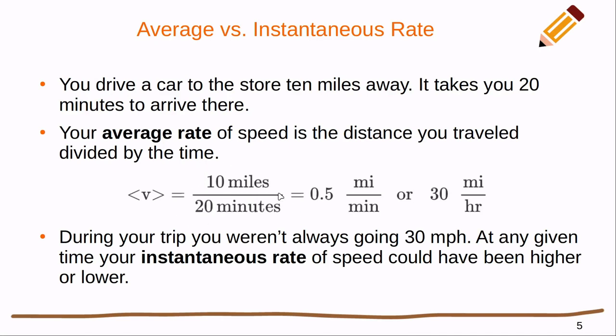Your average rate of speed is the distance you traveled divided by the time. So it's 10 miles away, it took me 20 minutes. That means I was going half a mile a minute, or if we convert this to something that we're more familiar with, 30 miles per hour. But when you take this trip to the store, you're not always going 30 miles an hour. You sped up to get to 30 miles, you slowed down to park. Maybe you hopped on the highway for a second and you were going quite a bit faster. Your rate of travel at any one of these times would have been your instantaneous rate of speed, and it would have been higher or lower than your average.